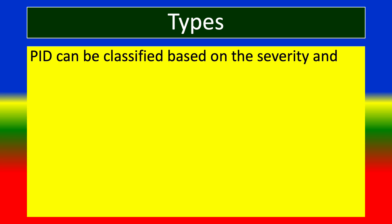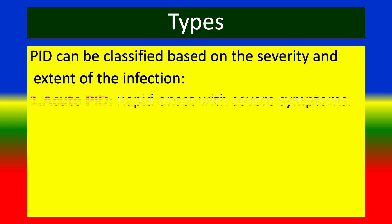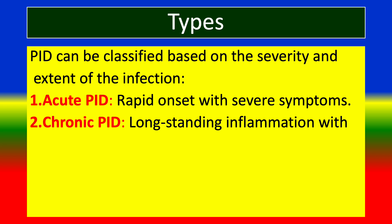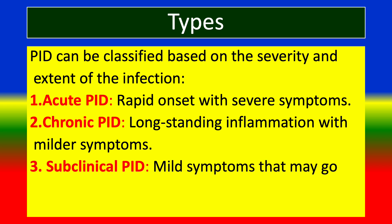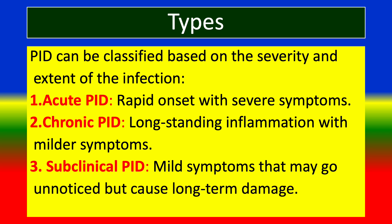PID can be classified based on the severity and extent of the infection. 1. Acute PID: rapid onset with severe symptoms. 2. Chronic PID: longstanding inflammation with milder symptoms. 3. Subclinical PID: mild symptoms that may go unnoted but cause long-term damage.